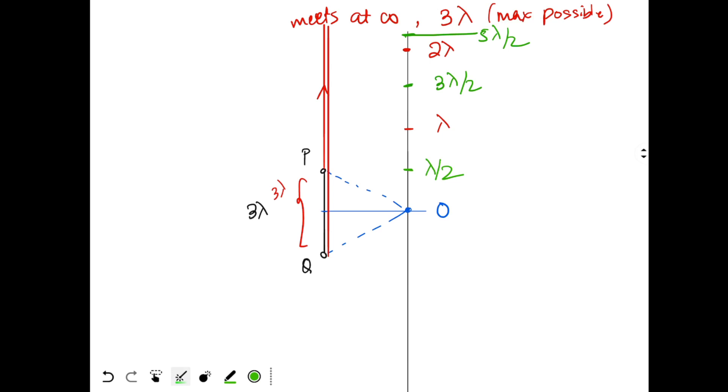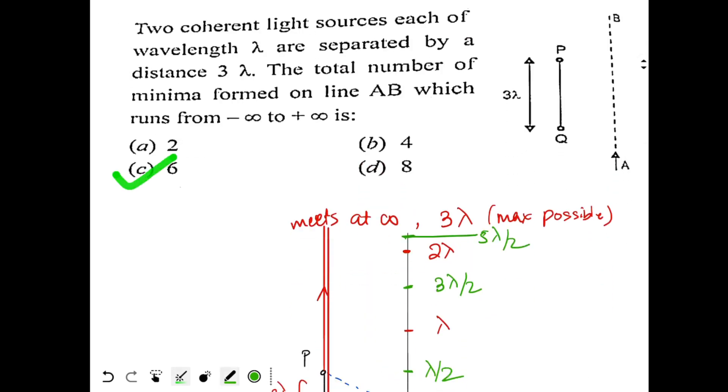So here I am getting 3 minima. Similarly, below also I will get 3 minima. So 3 minima above zero, 3 minima below zero, so total will be 6 possible minima. So answer is 6.